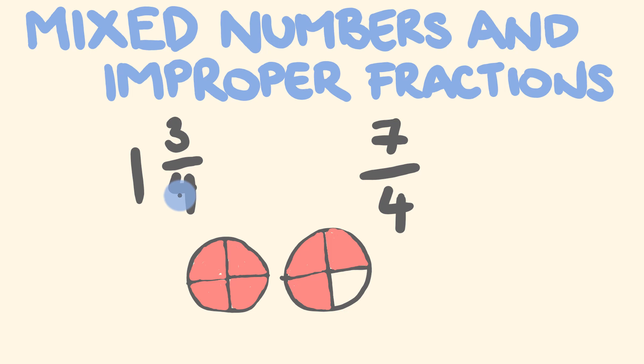But what you also may be able to notice is this: How many quarters all together are shaded in? We have 1, 2, 3, 4, 5, 6, 7. So we have 7 quarters. So these are pretty much just a different way of saying exactly the same thing.